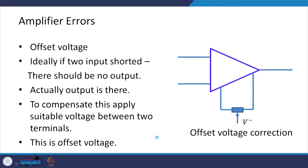In the amplifier there is also an error called offset voltage. Ideally, if two inputs are shorted there should be no output, but actually some output is present. To compensate this, a suitable voltage is applied between the two terminals — this is the offset voltage, and this is how offset voltage correction is provided.